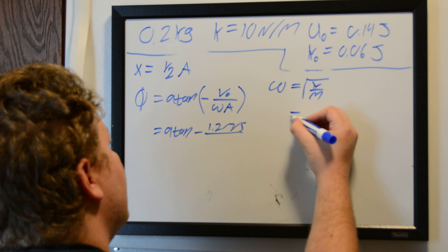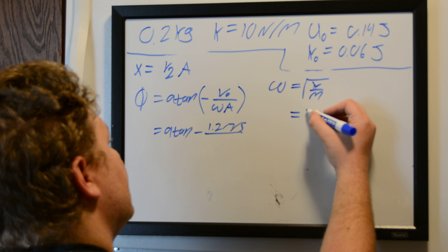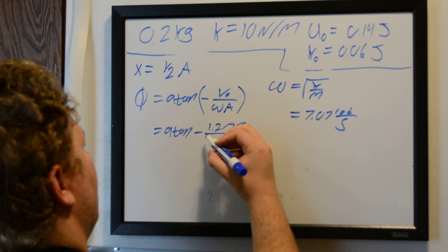So that's just going to be 7.07 radians per second. Let's go ahead and put that in here. And from the problem,